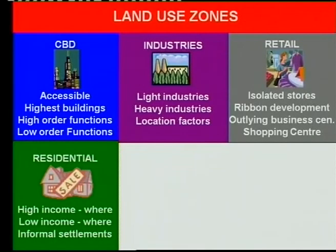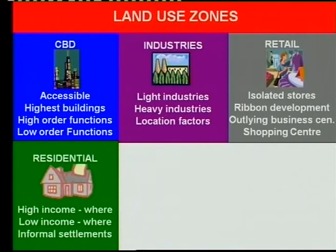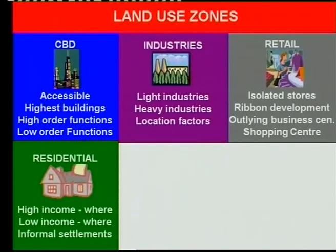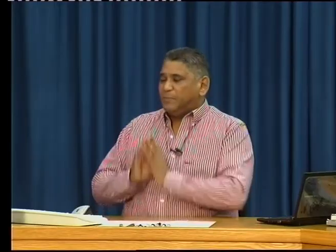Residential areas — the high income areas. Where do we get them? Against a hill, against a mountain. Your low income areas — where do we find them? Close to the factories, because that's where they work. And then, informal settlements. See that you know what informal settlements look like, the characteristics of informal settlements, and what's happening in your informal settlements. Squatter camps — in the exams, they previously asked questions regarding informal settlements, and people didn't know that it's a squatter camp they were actually talking about. So see that you know all this.